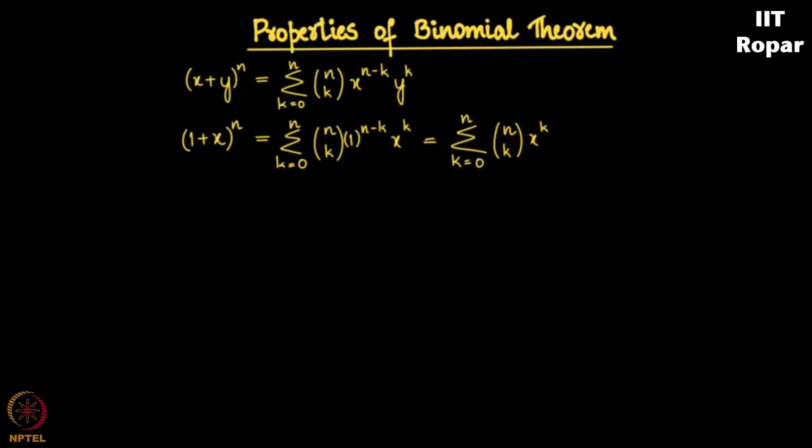The next property: when I expand x plus y whole power n, I have these terms: n choose 0, x power n, y to the 0, plus n choose 1, x to the n minus 1 into y, plus n choose 2, x to the n minus 2 into y square and so on. And the last term would be n choose n, x to the 0 into y to the n.